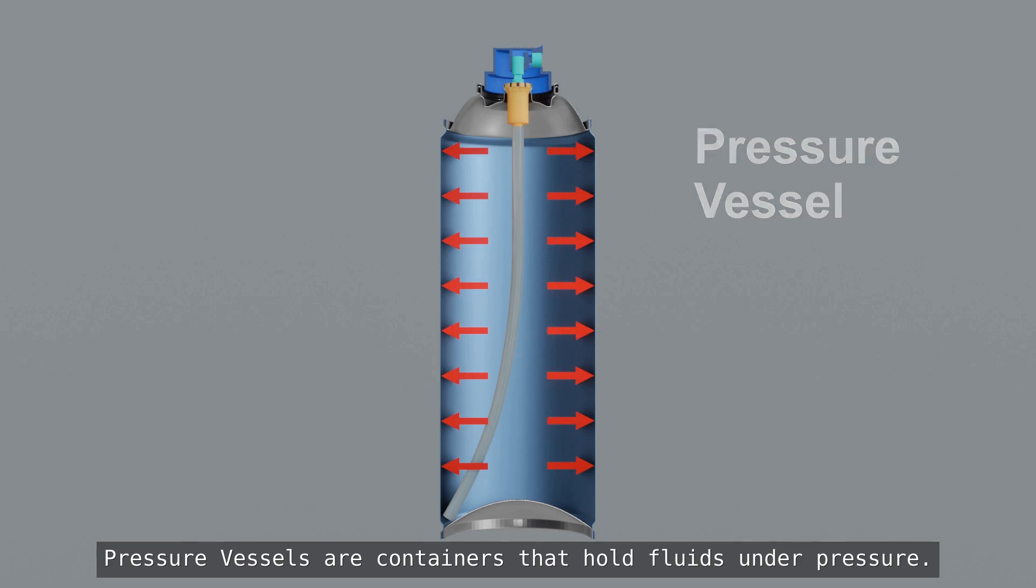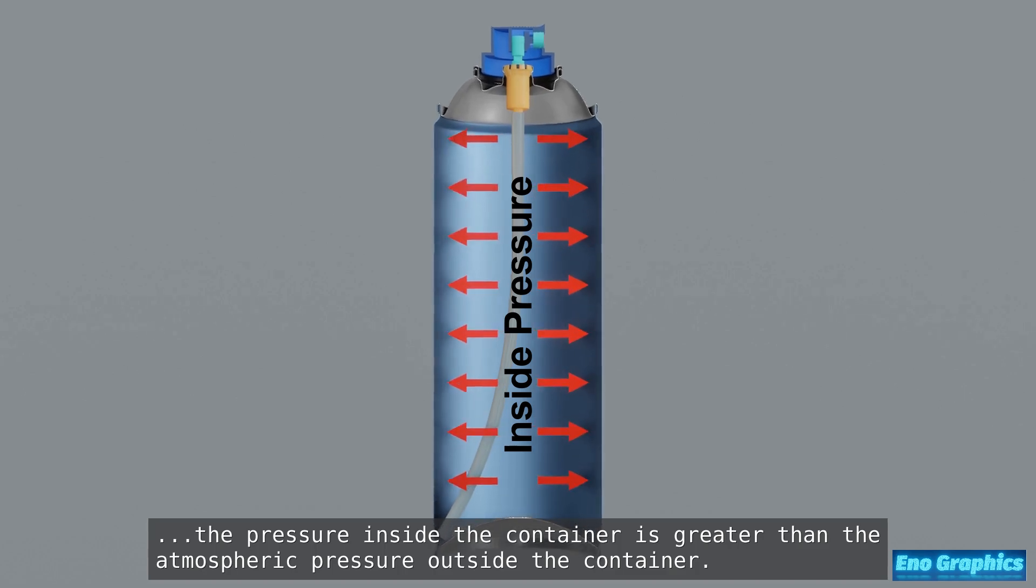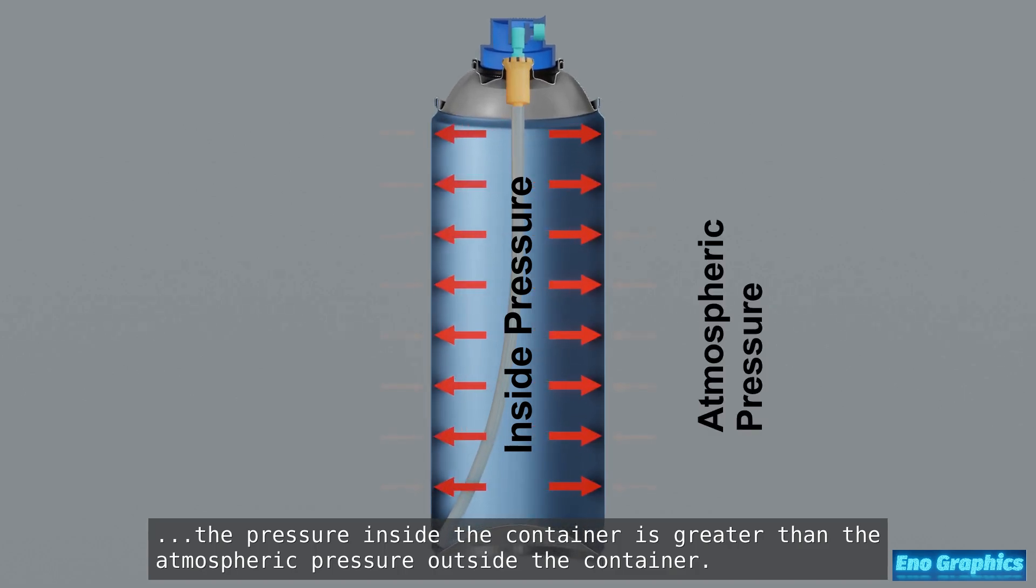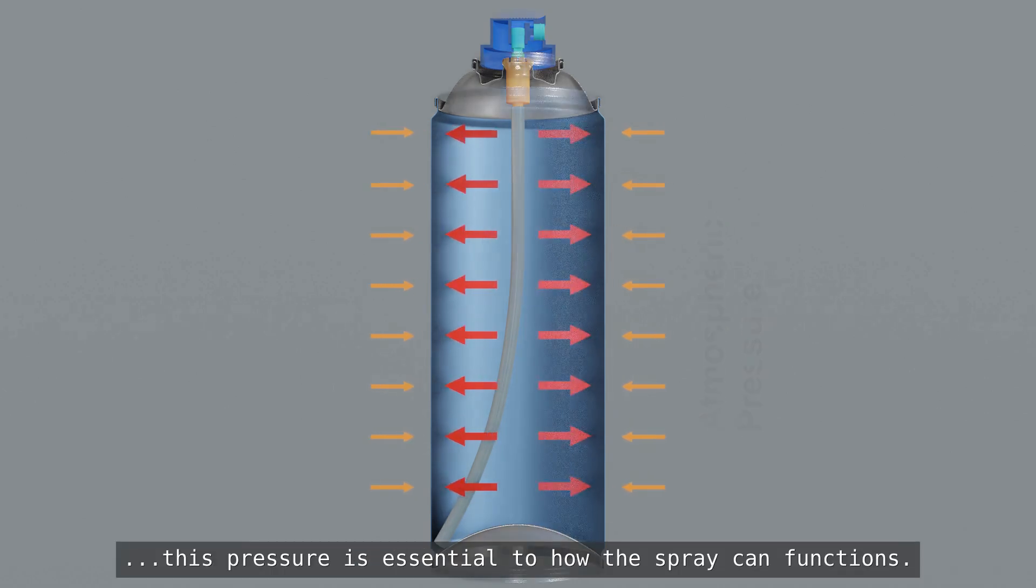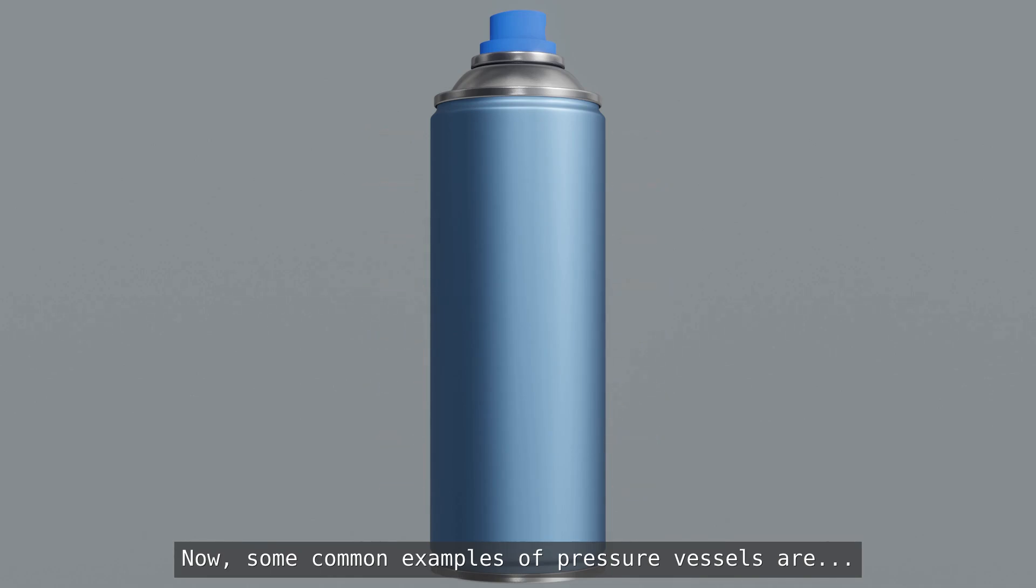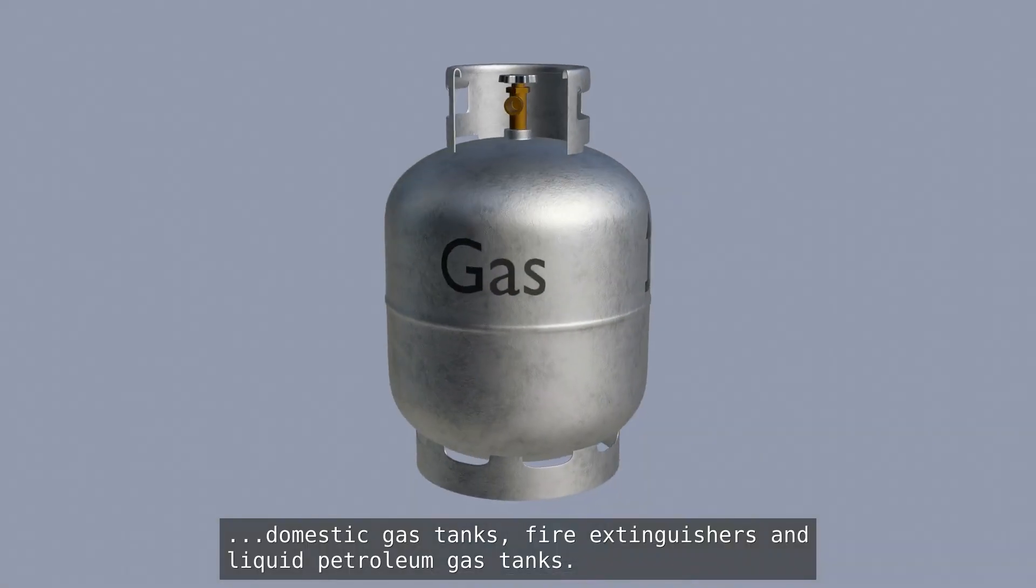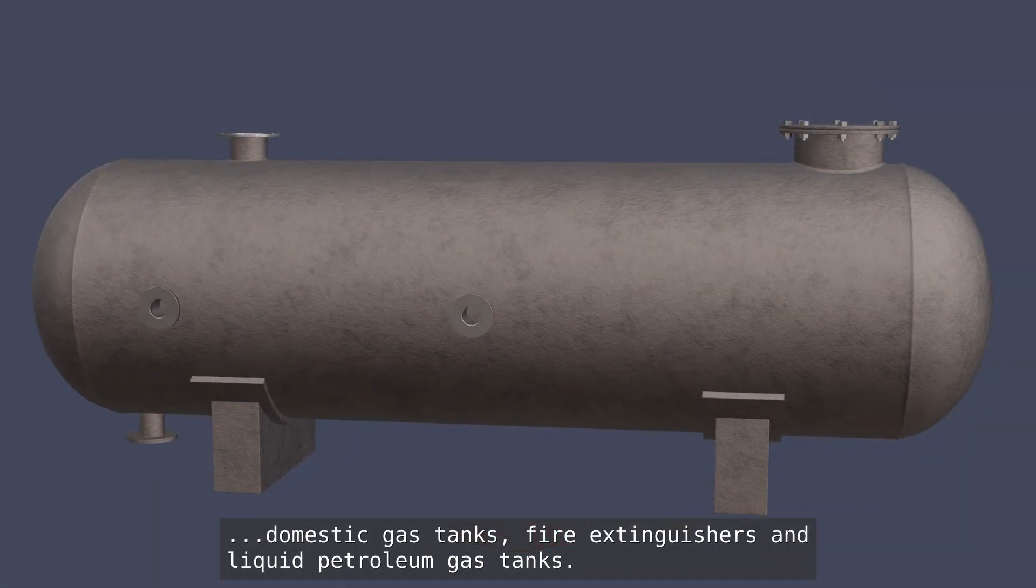Pressure vessels are containers that hold fluids under pressure. This simply means the pressure inside the container is greater than the atmospheric pressure outside the container. As we shall see, this pressure is essential to how the spray can functions. Some common examples of pressure vessels are domestic gas tanks, fire extinguishers, and liquid petroleum gas tanks.